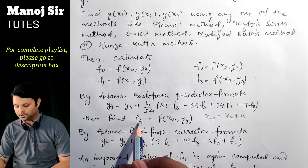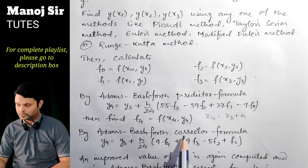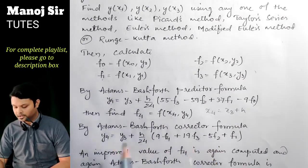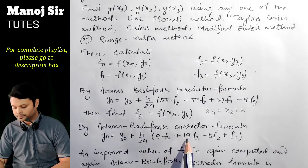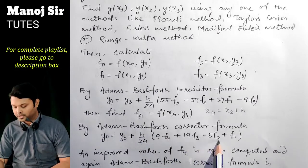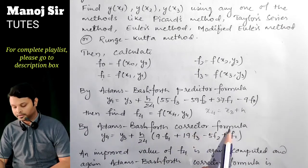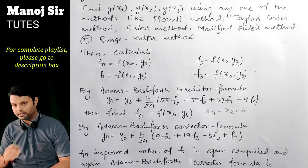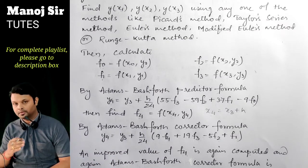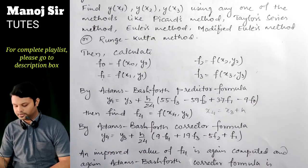Now apply the Adams-Bashforth corrector formula: y₄ = y₃ + (h/24)(9f₄ + 19f₃ − 5f₂ + f₁). After using this corrector formula, you have a value of y₄. You can declare that as the answer, but you can also obtain an improved value of y₄ that is closer to the true value.